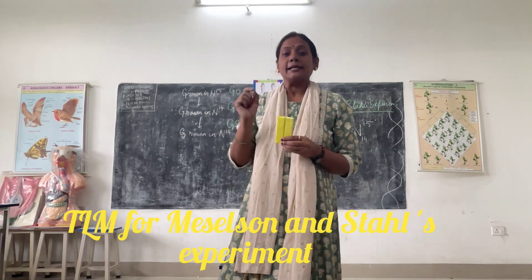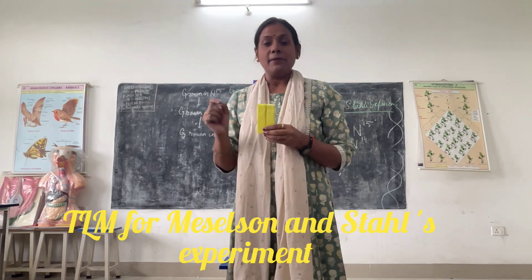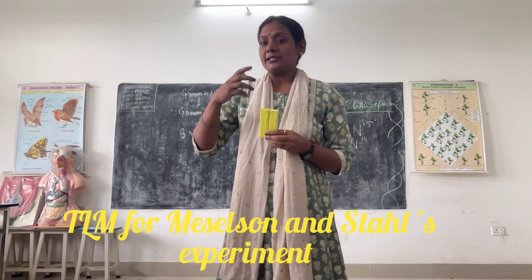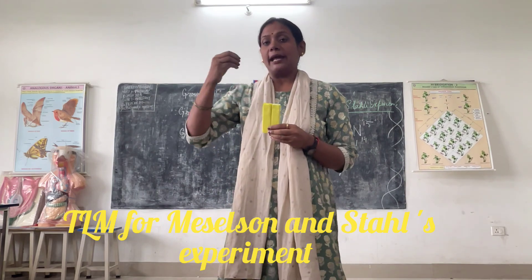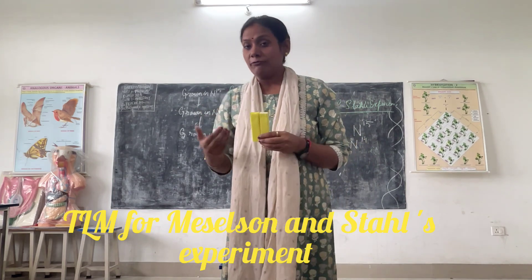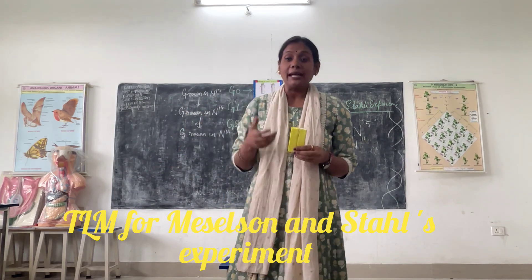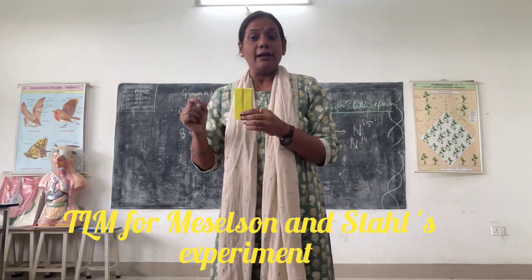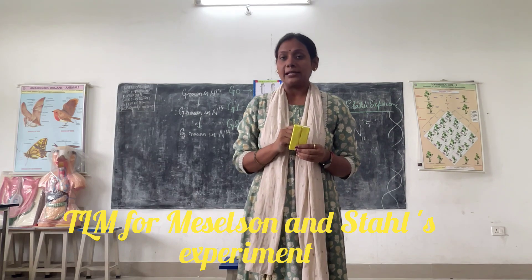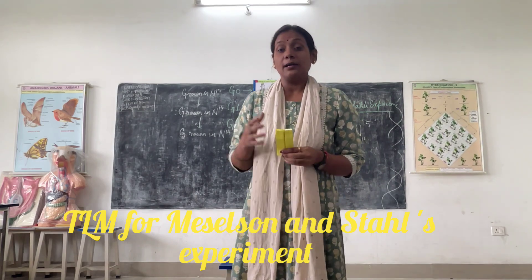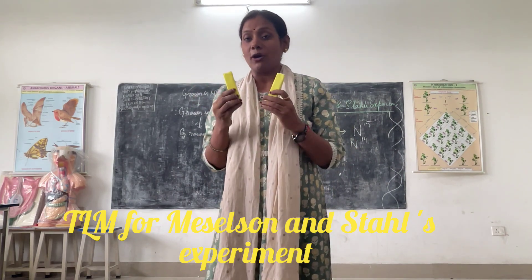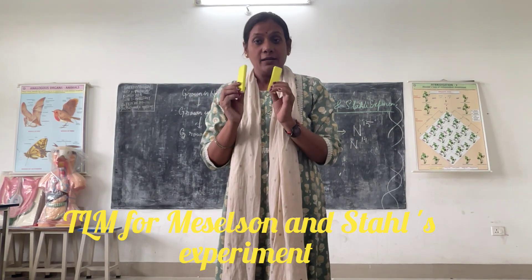Here I am only giving the experimental use of the DLM so that students can understand the DNA strands of N14 and N15 — how many strands of N14 will come in the next generation, how many strands of N15 will be created, how many hybrid strands will be formed, and how many pure N14 strands will be formed. Many parts have been taught in theoretical classes. Here I am explaining the different strands using different colored DNA strands to help students understand.